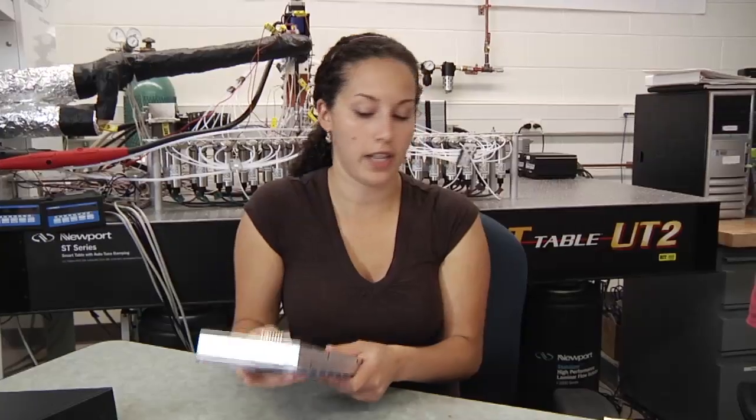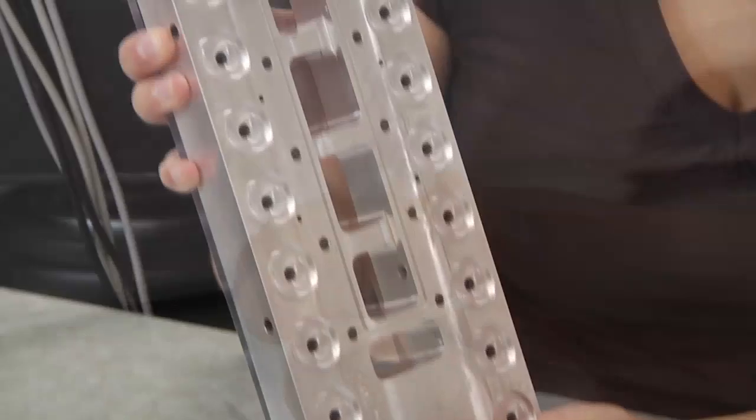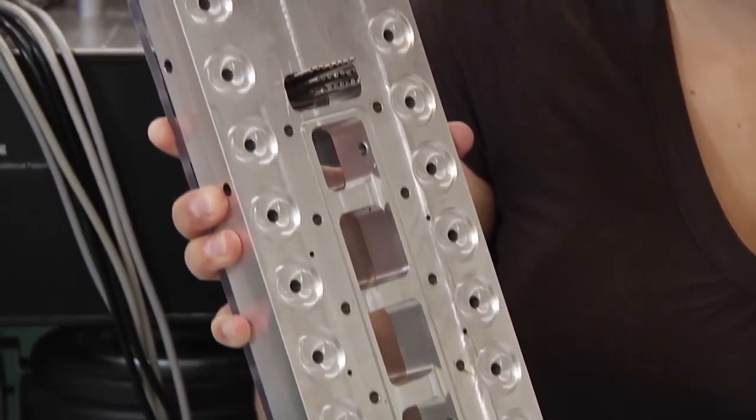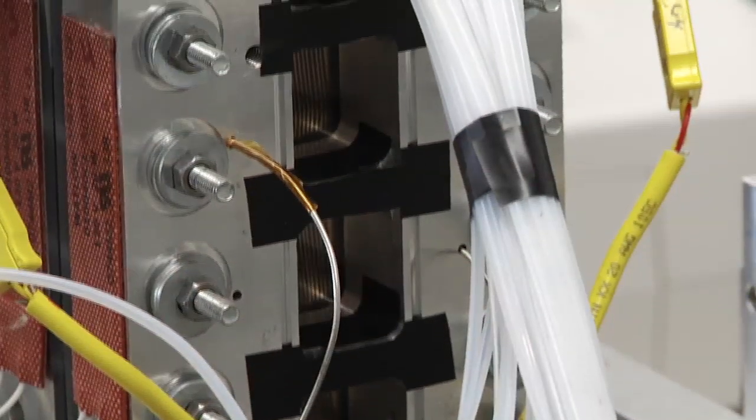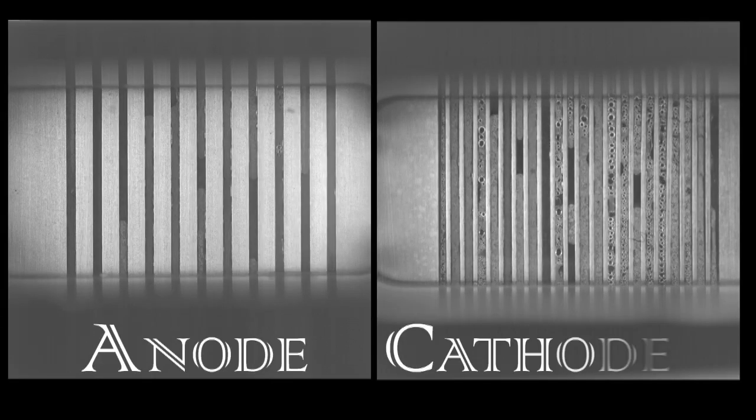So basically, we're going to have to take this new sapphire and update our design such that we can still get access inside the cell and visualize the components while the cell is operating. The modified cell represents actual automotive geometry and allows for simultaneous visualization of the anode and cathode.